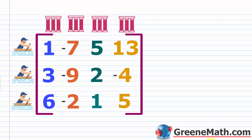When we talk about a matrix in math, normally we're speaking about an ordered array of numbers, or a rectangular array of numbers. When we talk about what's inside of a matrix — these numbers — so for example, reading across, I have 1, negative 7, 5, and 13. Then I have 3, negative 9, 2, and negative 4. Then I have 6, negative 2, 1, and 5. All of these numbers inside the brackets represent the elements or the entries of the matrix.